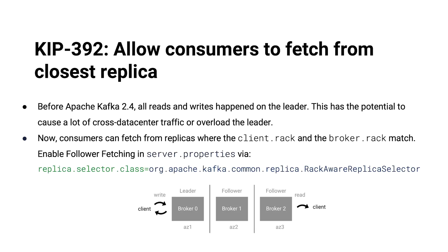There are two important configurations here: client rack and broker rack. Broker rack is a broker-level configuration — just a name of the rack, availability zone, or data center that broker is in. Likewise, client rack is that same thing — whatever availability zone, data center, or physical rack that client is in. If that client is matched to the broker rack of a follower that's in sync, that client can potentially read from that follower partition on that broker.